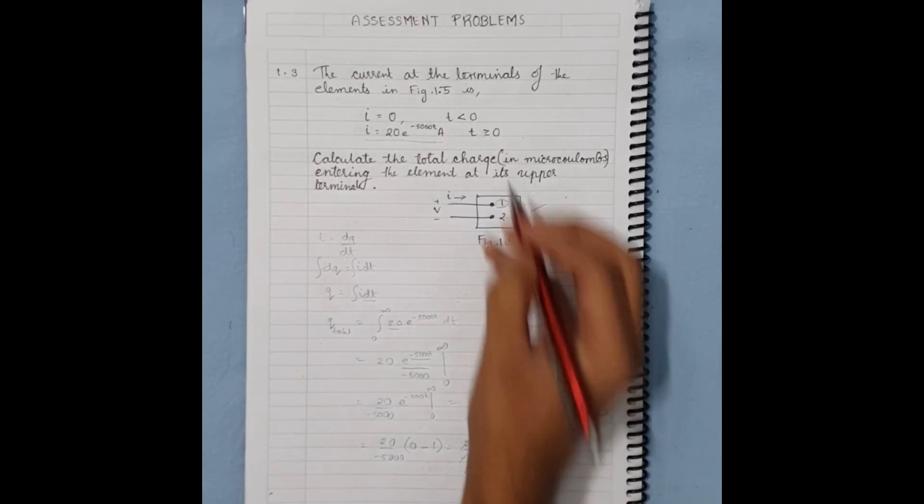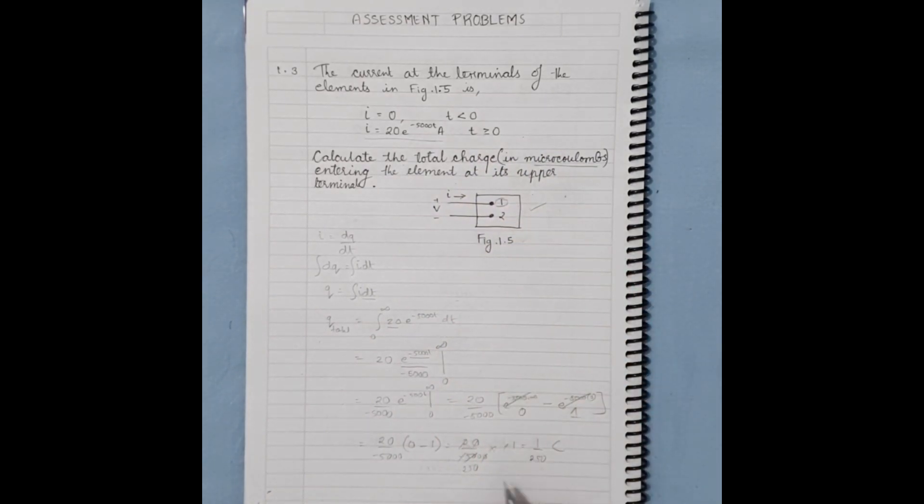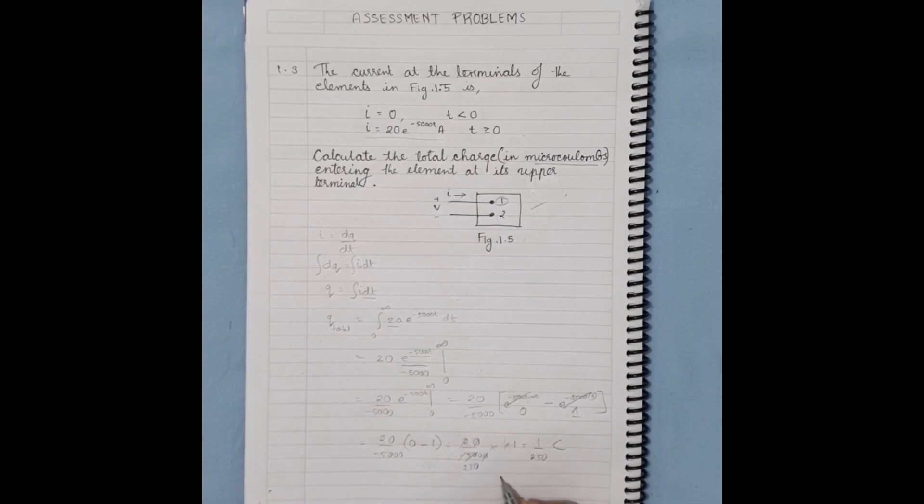Remember we had to find in microcoulombs, so 1 coulomb is 10^6 microcoulombs. We will write (10^6)/250 microcoulombs.